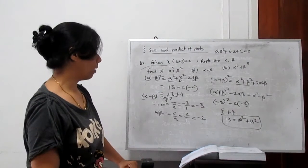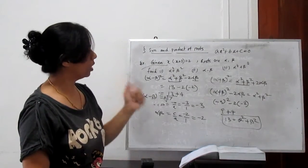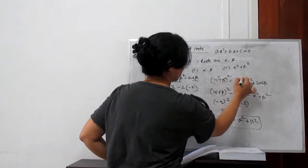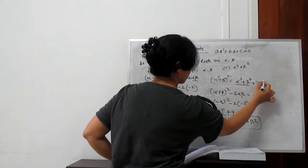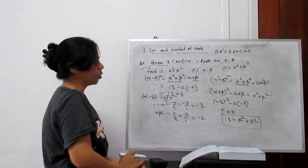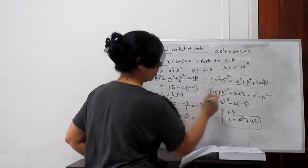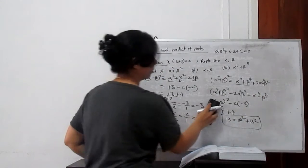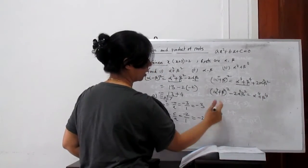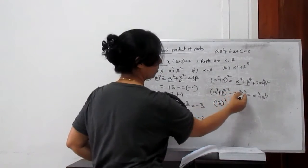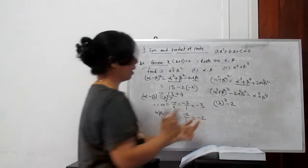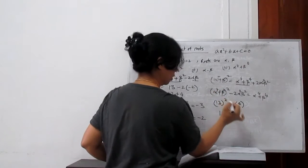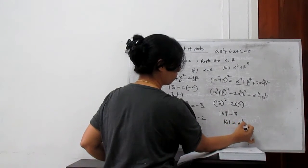The third part asks for alpha⁴ + beta⁴. We write alpha⁴ + beta⁴ = (alpha² + beta²)² - 2(alpha·beta)². We have alpha² + beta² = 13, and alpha·beta = -2, so (alpha·beta)² = 4. Therefore: 13² - 2(4) = 169 - 8 = 161. So alpha⁴ + beta⁴ = 161.